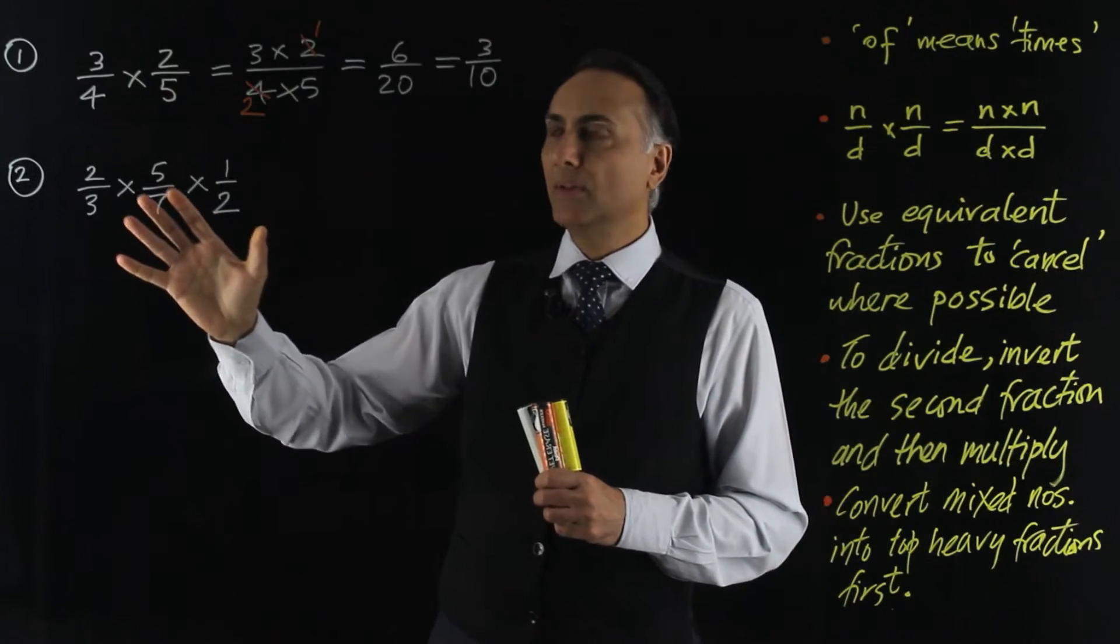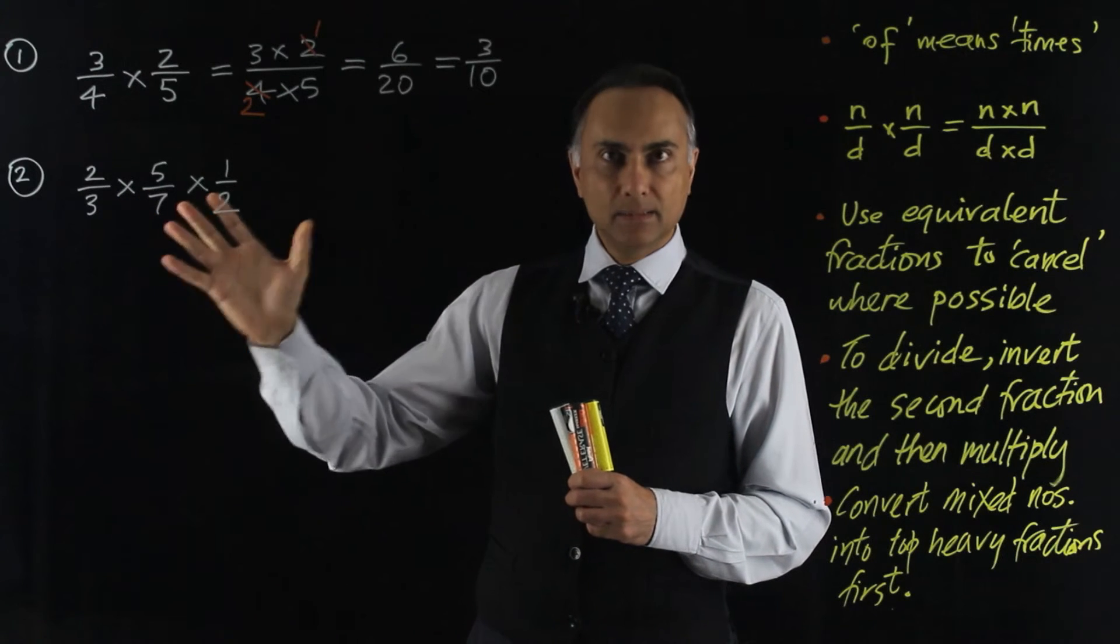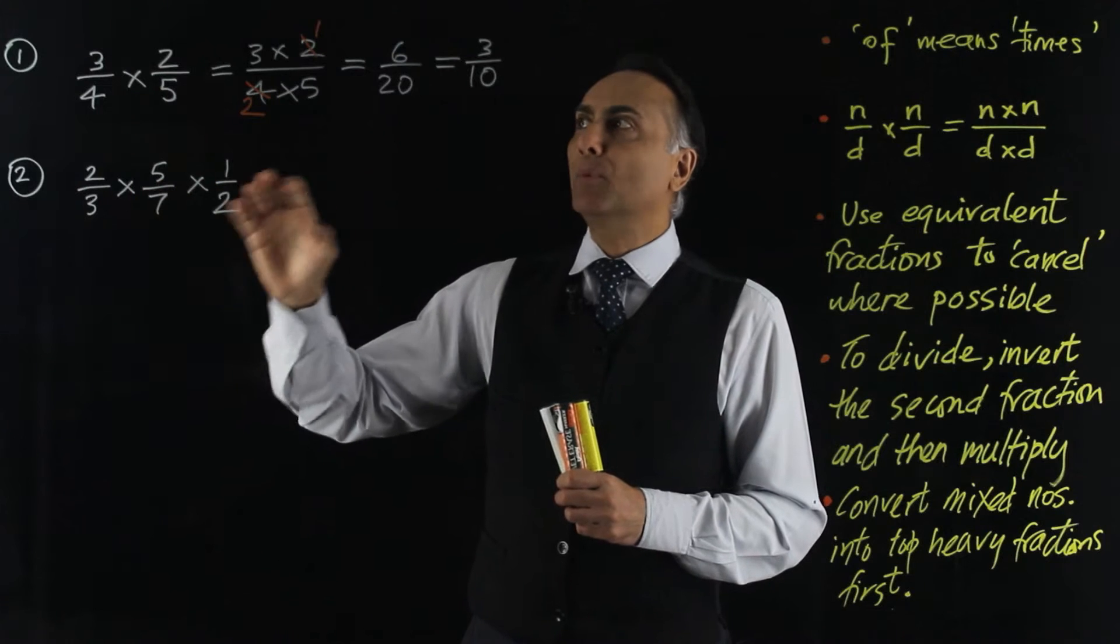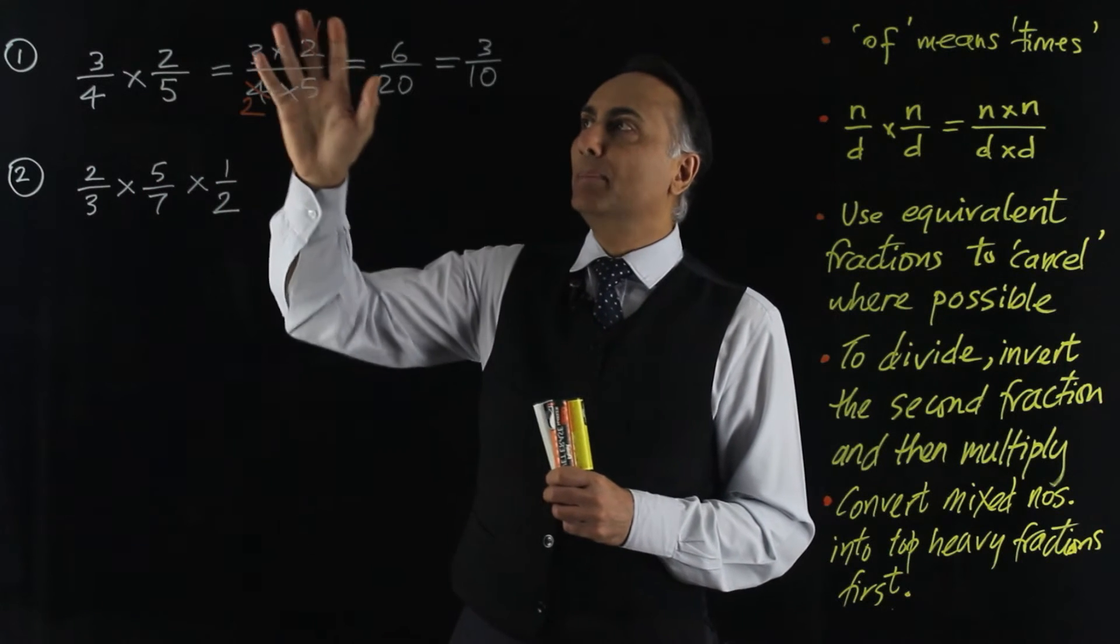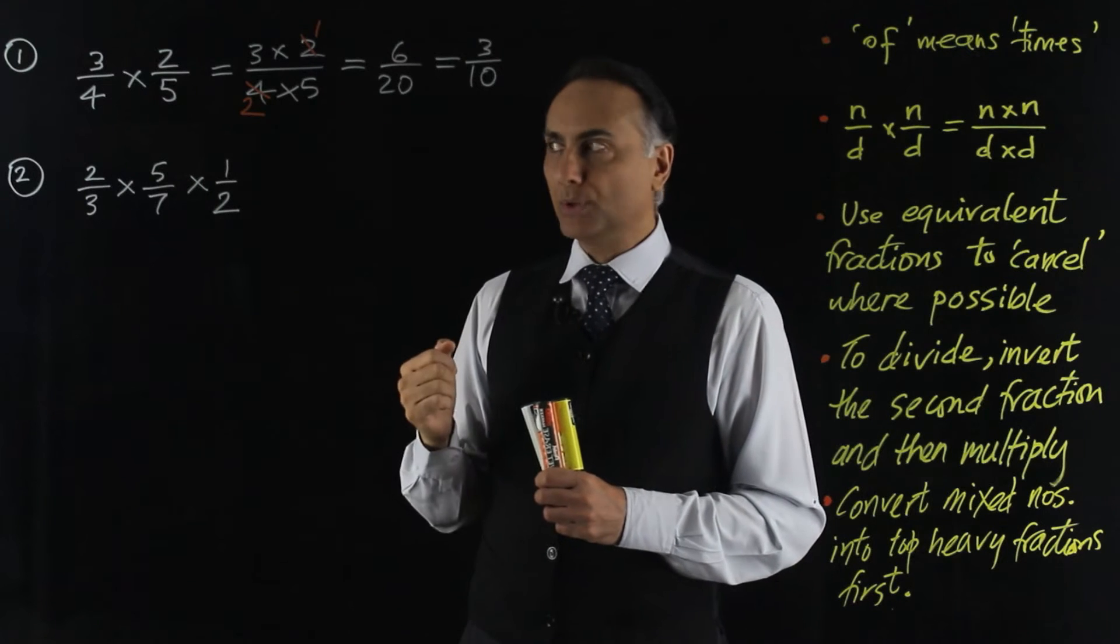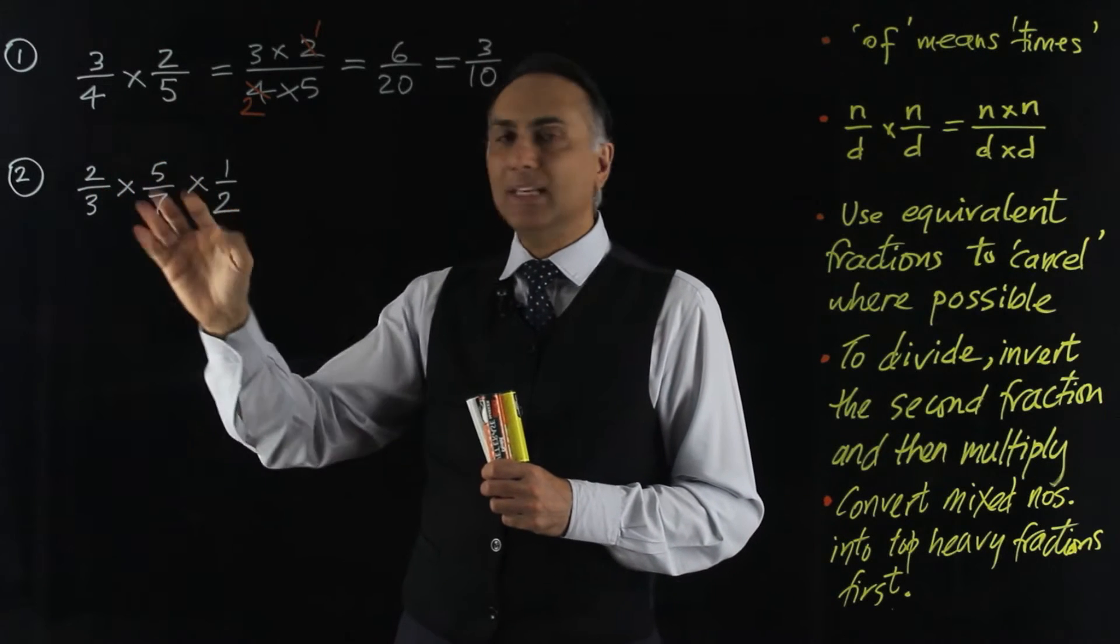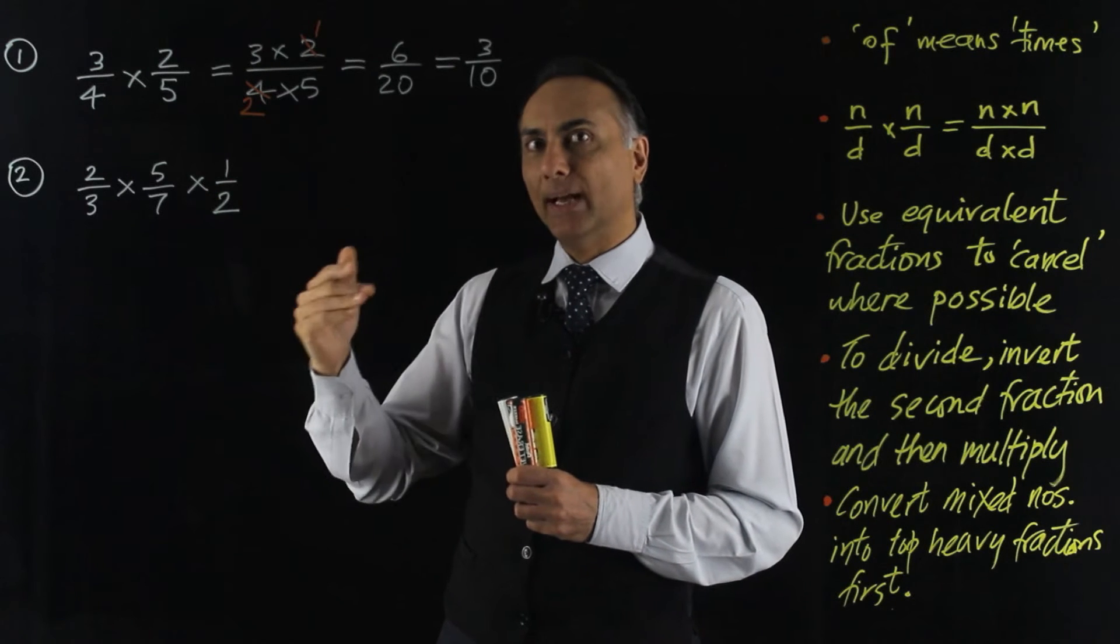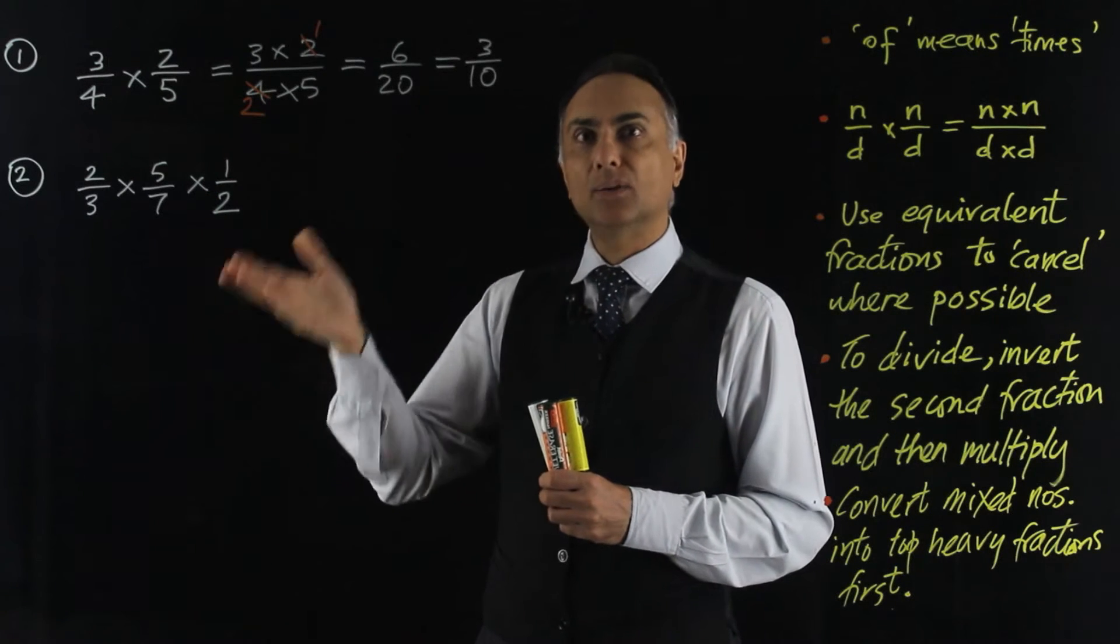I'll take an example with 3 fractions. It doesn't make any difference to the method. And I'm also going to skip a couple of steps which are unnecessary now that we know what's going on. And I'm going to look to see if there's any reducing or cancelling that I can do. That way I end up with smaller numbers to work with.